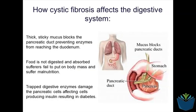In the digestive system, it can block the action of the pancreas, which is associated with several types of digestive enzymes. If the ducts serving the pancreas are blocked, the level of digestion is reduced. A common symptom of cystic fibrosis is therefore malnutrition. Also, because it affects the pancreas, people with cystic fibrosis are more likely to develop diabetes.